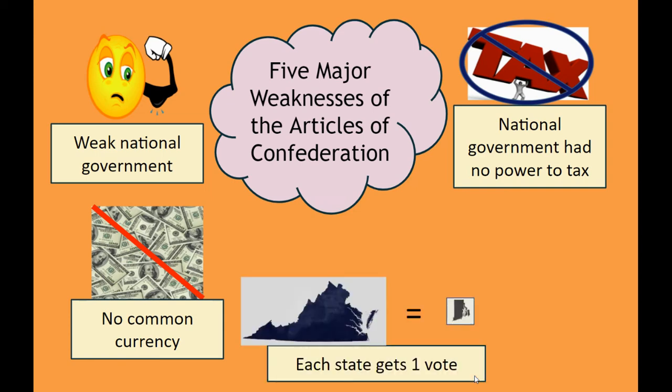Another weakness is that each state gets one vote in the national government. So Virginia, a pretty big state, was equal to tiny Rhode Island, a pretty small state. This was a weakness because it meant that places like Virginia, which had so many more people than Rhode Island, had equal power, and the big states really didn't like that very much.